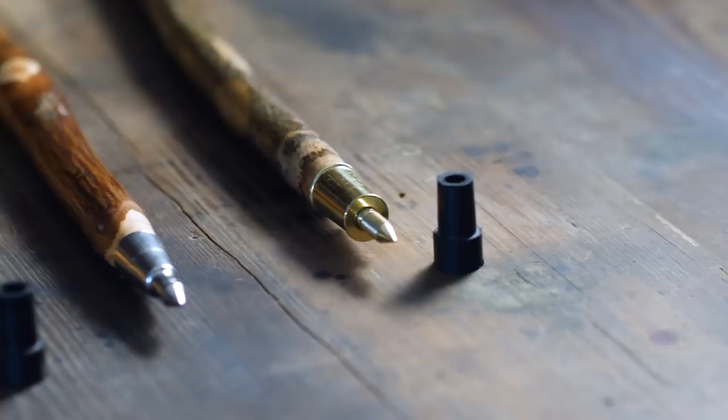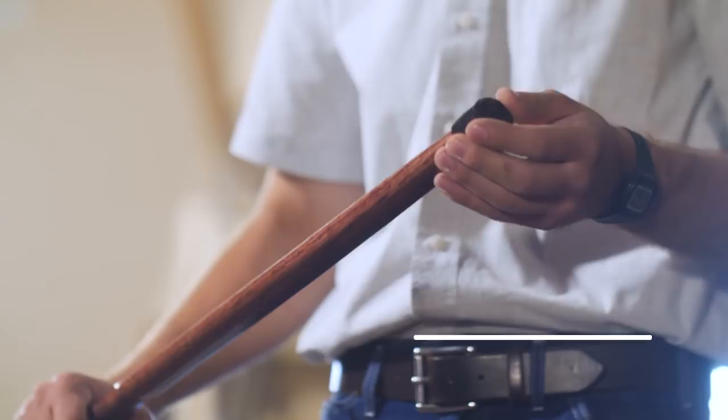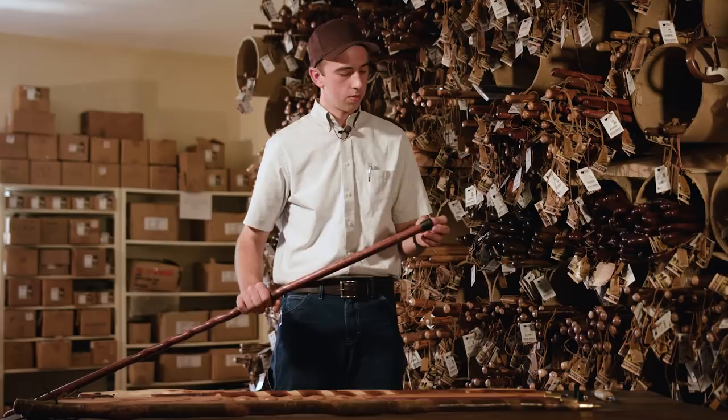The first one is the rubber ferrule that's going to come standard with whatever walking stick or cane you order, unless you specify something different. This is a high quality rubber ferrule that we have made just for us. You'll notice our little logo on there.